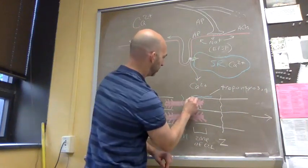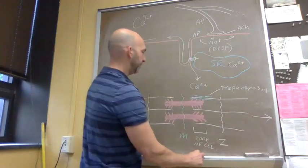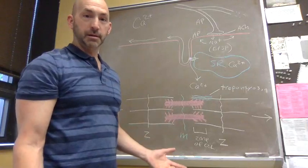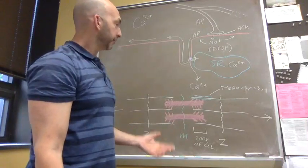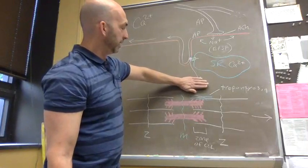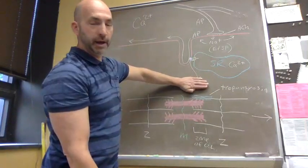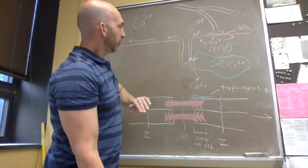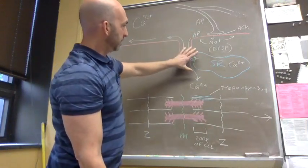It sits between the thin filament and the myosin head, so it inhibits the cross-bridges from forming. When there's no calcium being released, that's where it sits—it sits in the way, and we can't form cross-bridges. Our muscle is uncontracted.